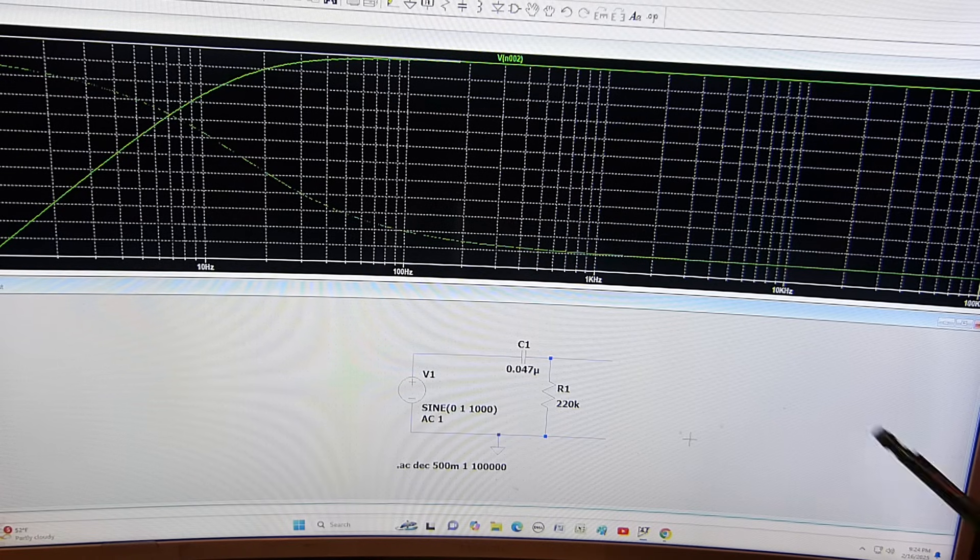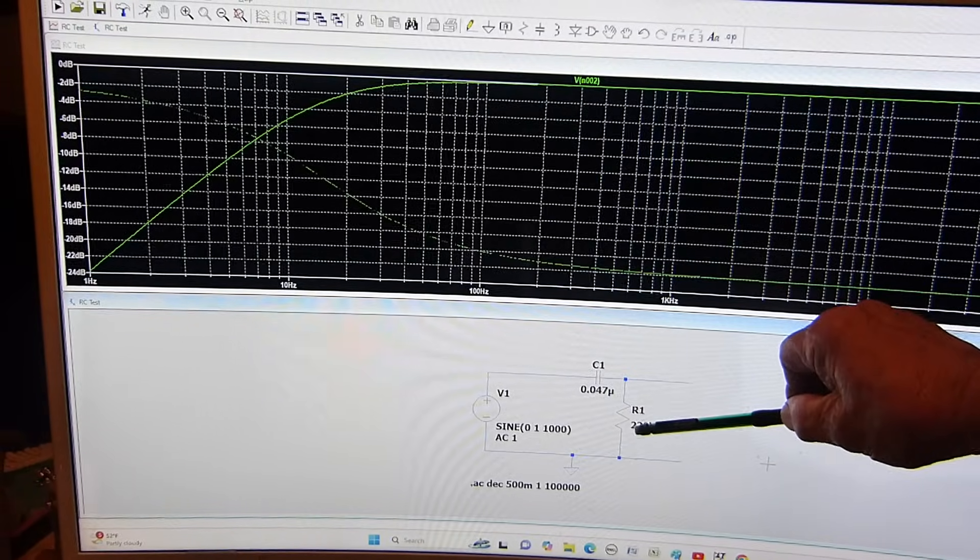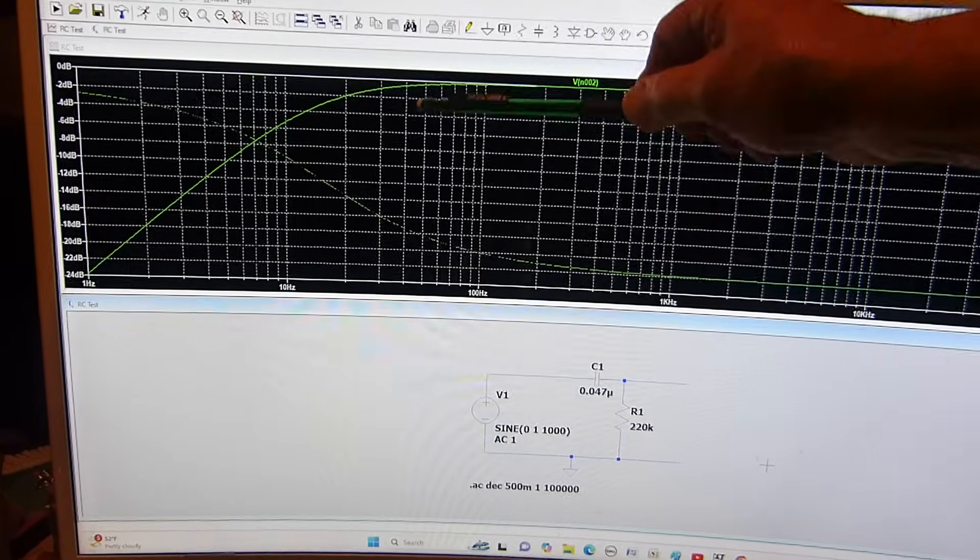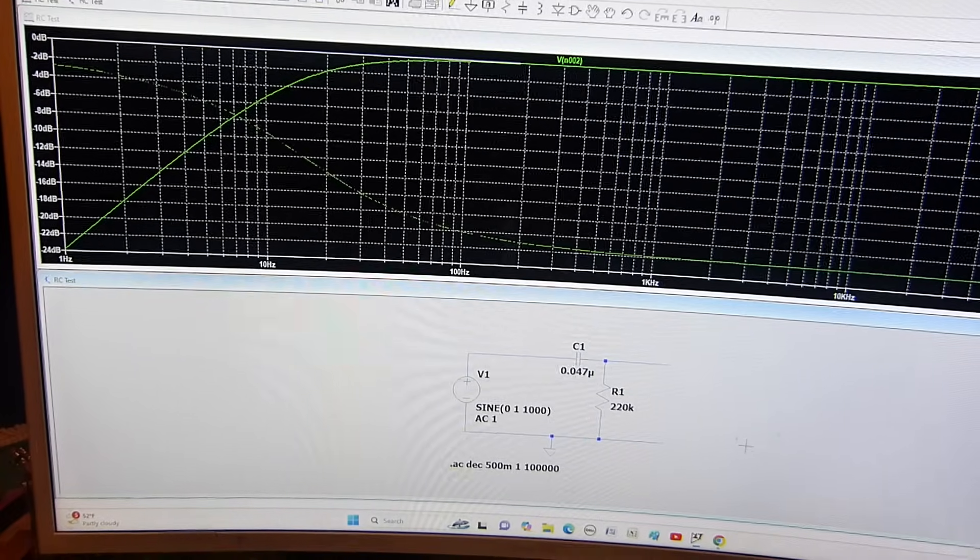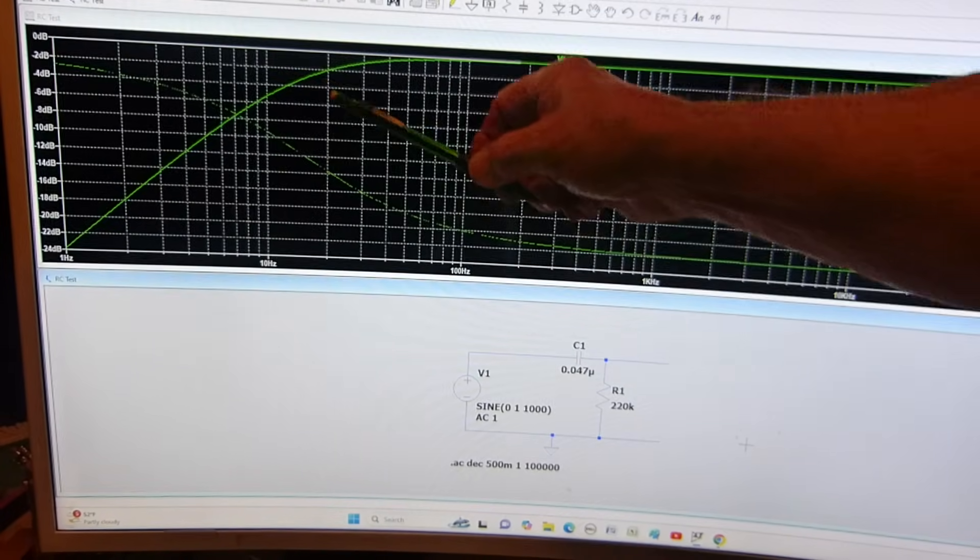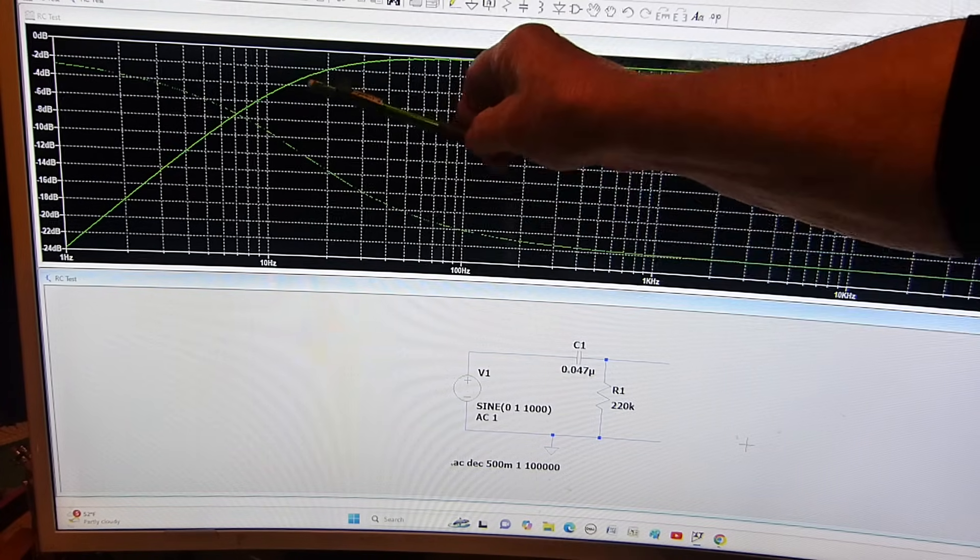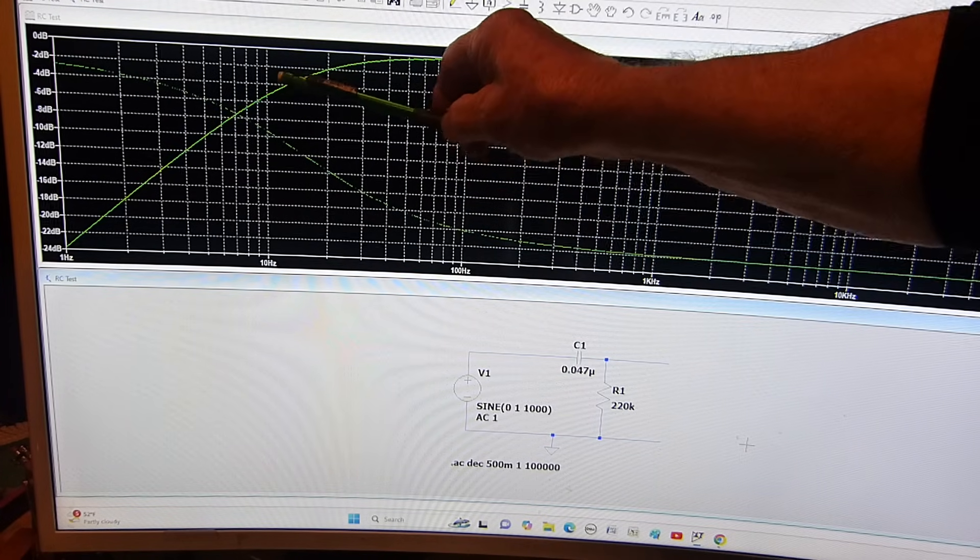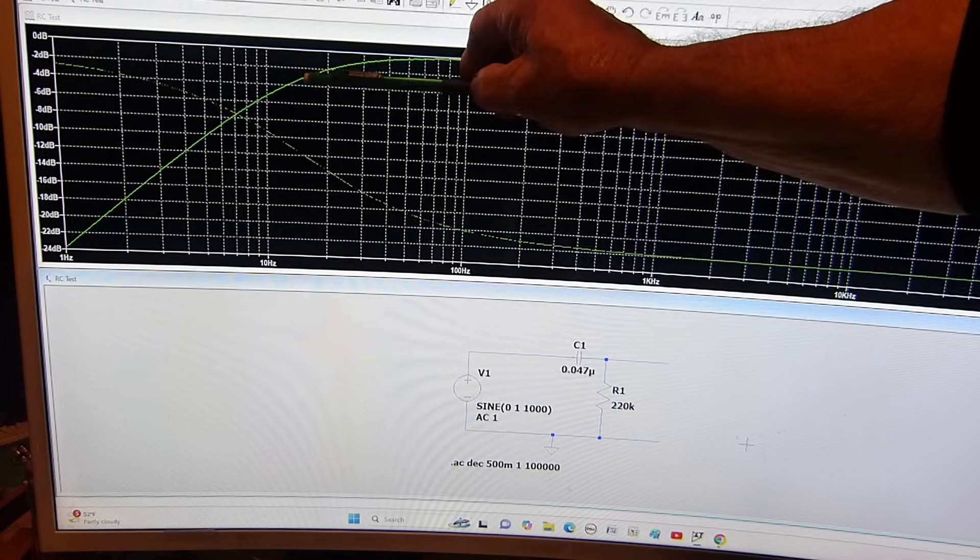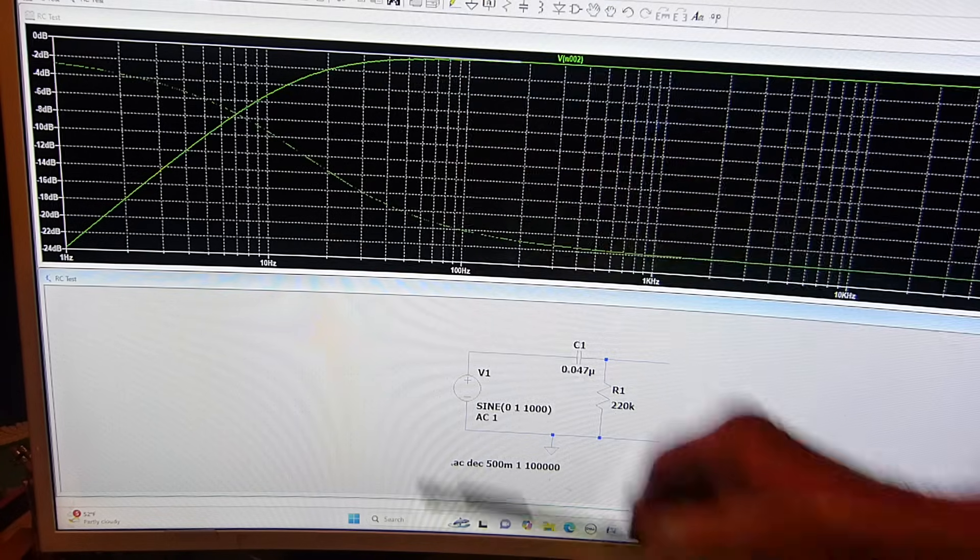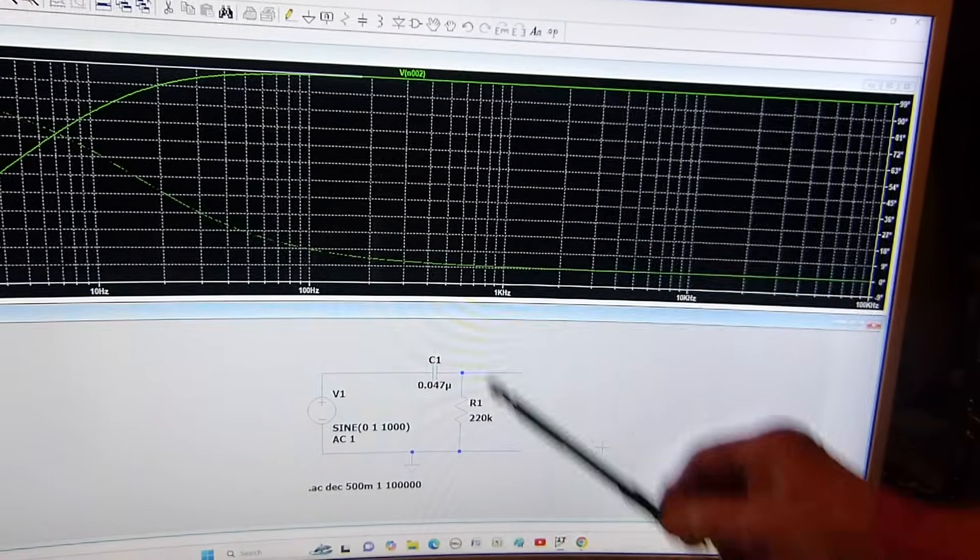Now this is if we change this to 0.047, left at 220k what it is. It has a corner frequency - we calculated that - about 15 hertz, 3dB somewhere around there. There's 20 hertz, so the 3dB point is right there.